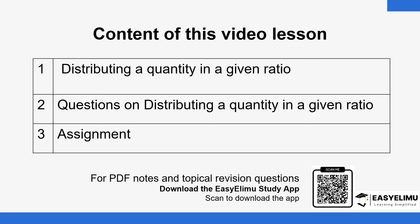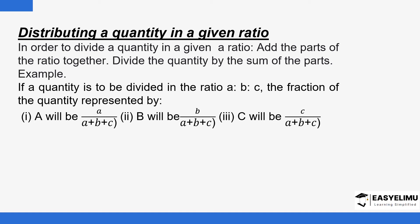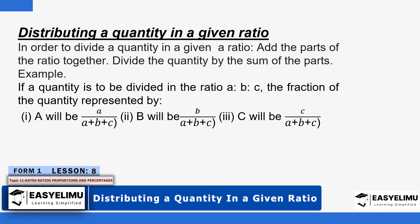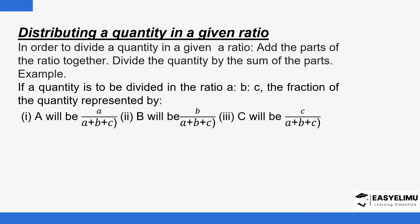In order to divide a quantity in a given ratio, you are supposed to first add the parts of the ratio together — that is procedure number one. Then divide the quantity by the sum of the parts. For example, if you have a quantity that is supposed to be divided in the ratio a to b to c...